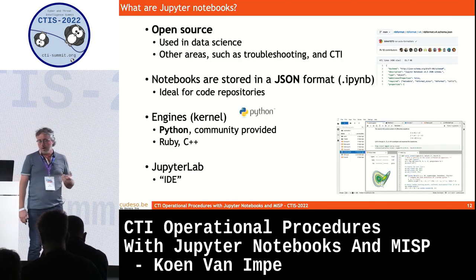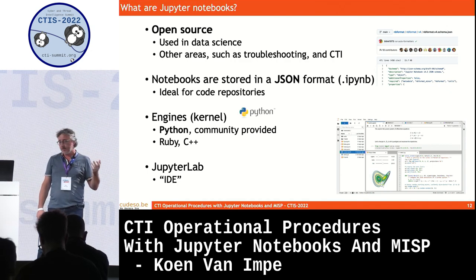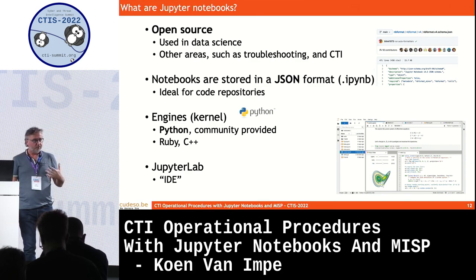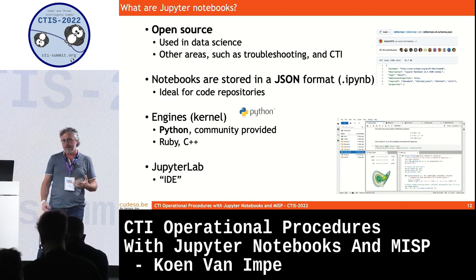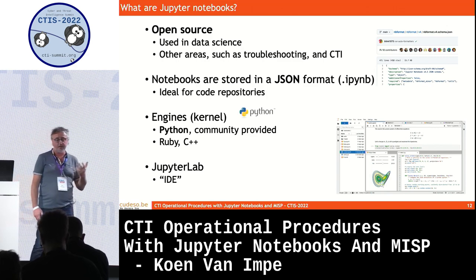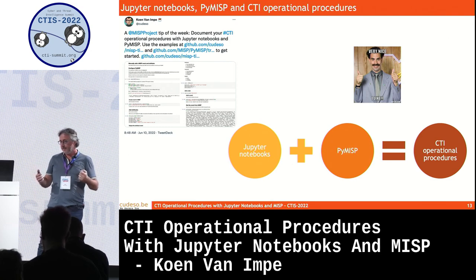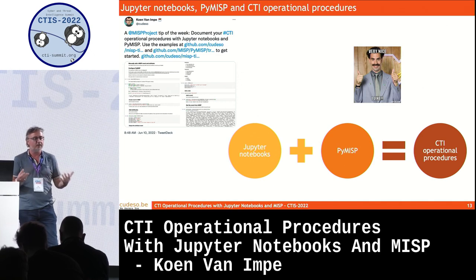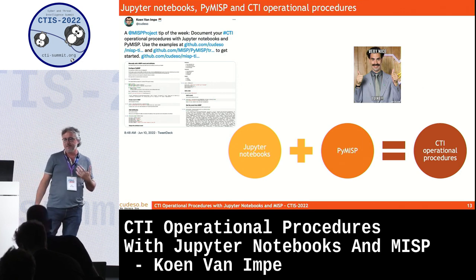Jupyter Notebooks are open source and heavily used in data science, but they find their way into other areas. A great feature is that the notebooks are stored in JSON format, which checks one of my requirements. The computational engine I'm going to use is Python, though there are other engines like C++ and Ruby. Combining Jupyter Notebooks and PyMISP helps me write simple — not complex — but very simple operational procedures. This match is already great.